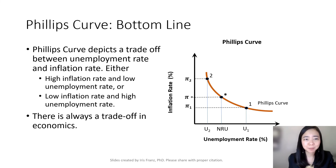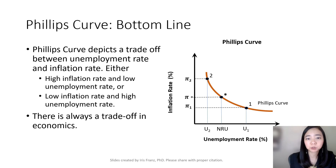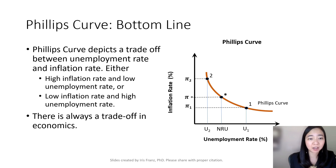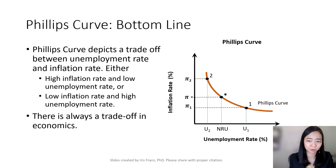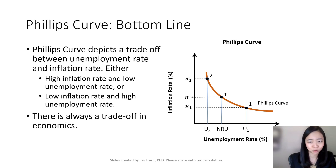Here is the bottom line of the Phillips curve. There is a trade-off between inflation rate and unemployment rate. Either we have high inflation rate and low unemployment rate, or we have low inflation rate and high unemployment rate. Remember, in economics, there is always a trade-off.